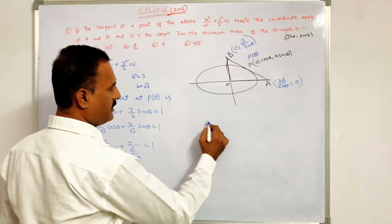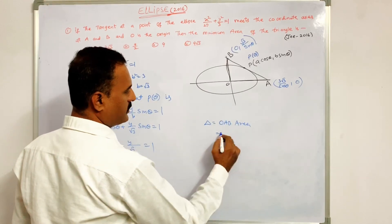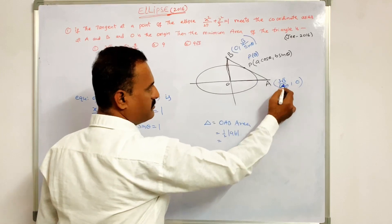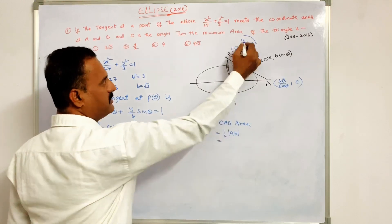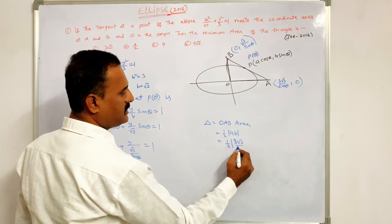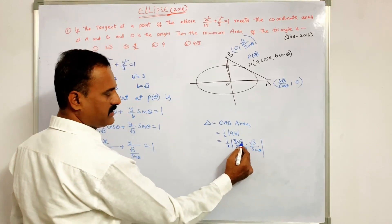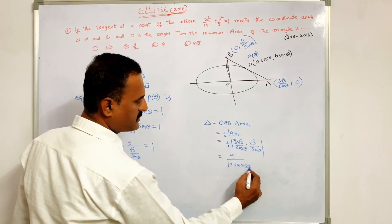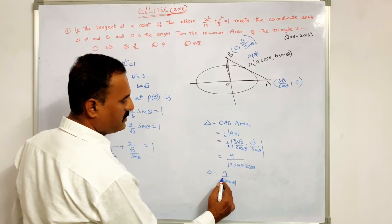Therefore area of triangle OAB = (1/2)|OA||OB| = (1/2) × (3√3/cosθ) × (√3/sinθ). Here √3 × √3 = 3 and 3 × 3 = 9, divided by |2 sinθ cosθ|. That equals Δ = 9/(2 sinθ cosθ) = 9/sin2θ.